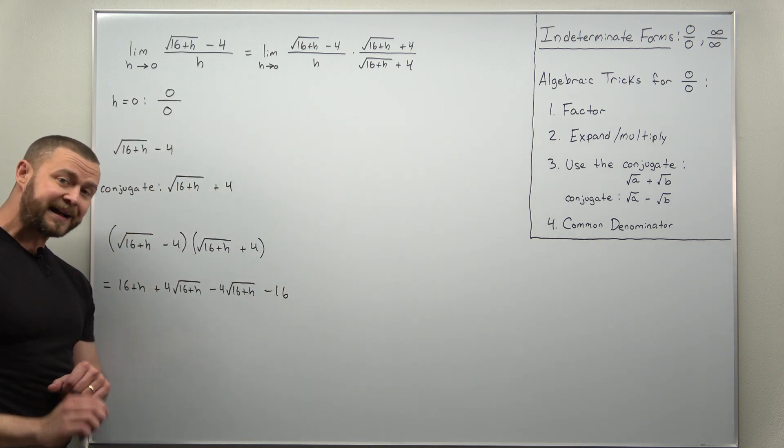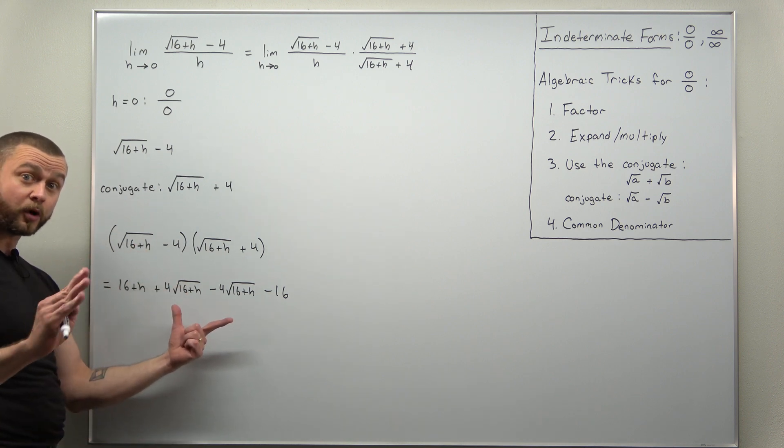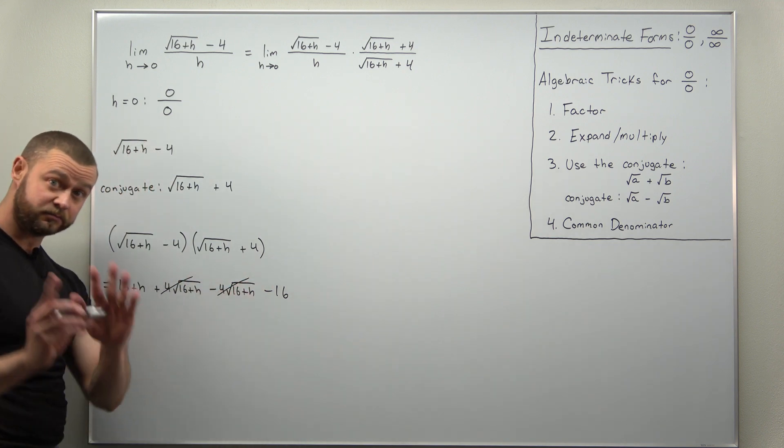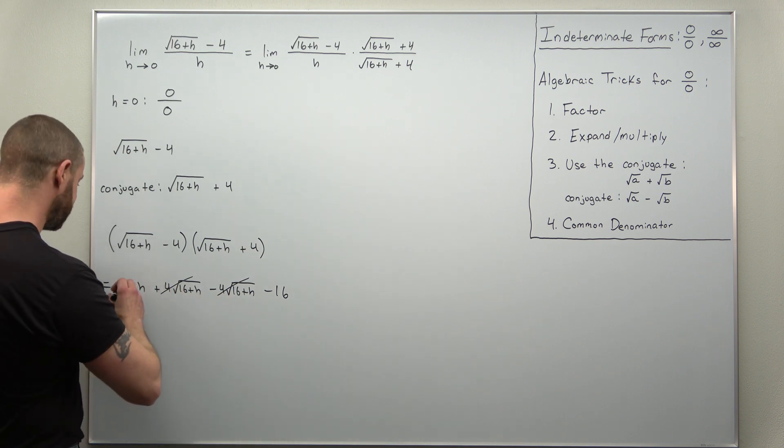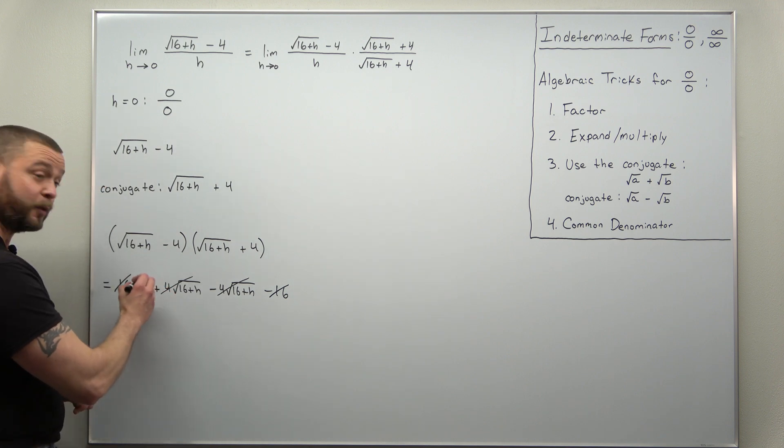Alright, now thinking back to algebra, your goal of using the conjugate was to have an expression with no more radicals or square roots. And here, the outers and inners certainly cancel. But we can go a little bit further. 16 and negative 16, those cancel out as well, leaving us with just h.